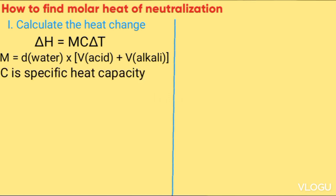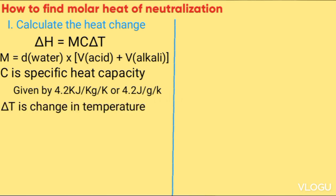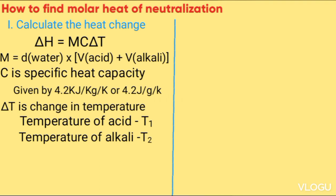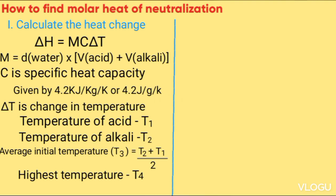C is the specific heat capacity, given as 4.2 kilojoules per kilogram per kelvin, or 4.2 joules per gram per kelvin. Delta T is the change in temperature, obtained by measuring the initial temperature of the acid T1, measuring the initial temperature of the alkali T2, then finding the average initial temperature T3 as (T1 + T2) divided by 2, then measuring the highest temperature obtained during the reaction, T4.